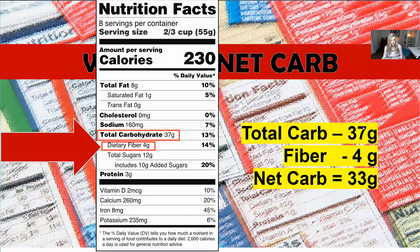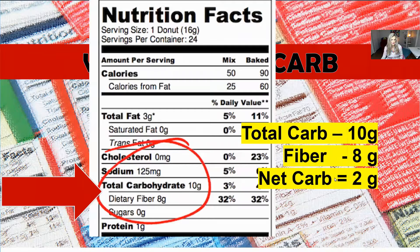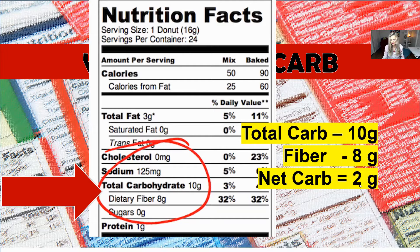Net carbs means your total carbohydrate on the label, and then you deduct the fiber. Here's another example — this is actually a donut. It has total carbohydrates of 10 grams and the dietary fiber is 8, so the net carbs would be 2. I wanted to show this example because if your dietician or diabetes educator is telling you to go strictly by net carbs, you could eat a donut and it's only 2 net carbs. But there's no nutritional value in a donut.